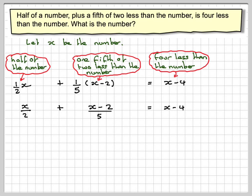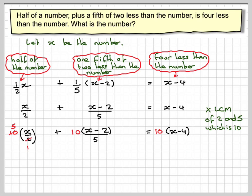The lowest common multiple of 2 and 5 is 10, so we multiply the whole equation by 10. We're going to get 10(x/2) plus 10(x-2)/5 equals 10(x-4). Two goes into 10 five times, five goes into 10 two times.